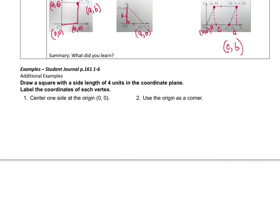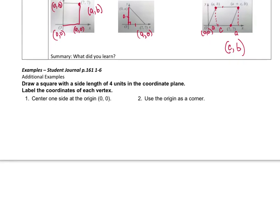All right, so we were going to do the student journal in class, but let's just do these additional examples here. For this first example, it says, draw a square with a length side 4 in the coordinate plane. Label the coordinates of each vertex. Okay, so they tell me on this one that the center, one side at the origin.